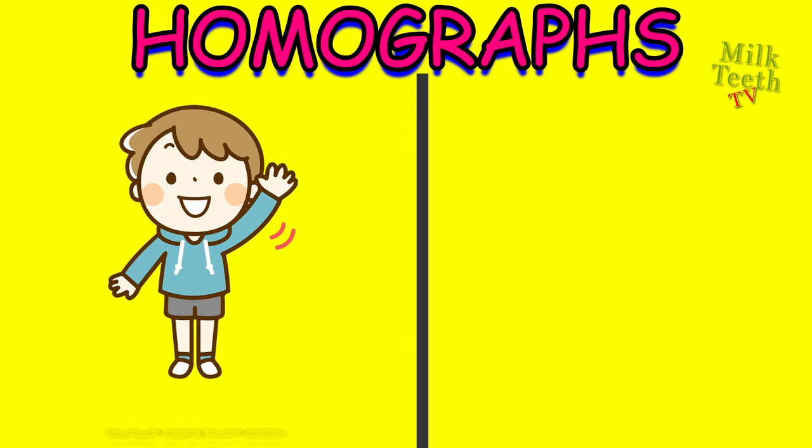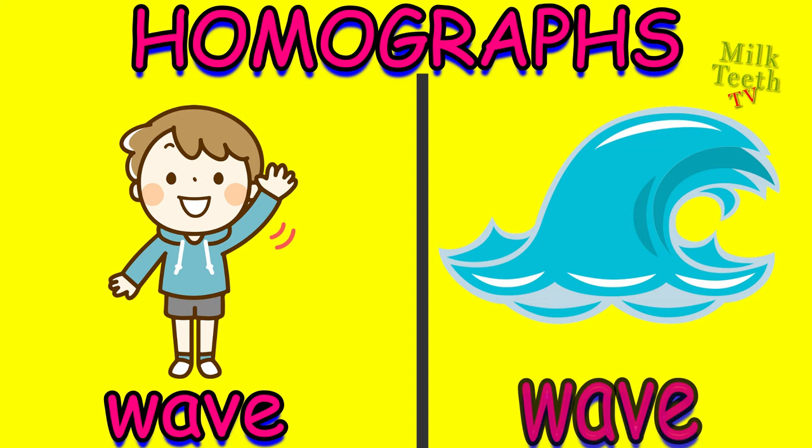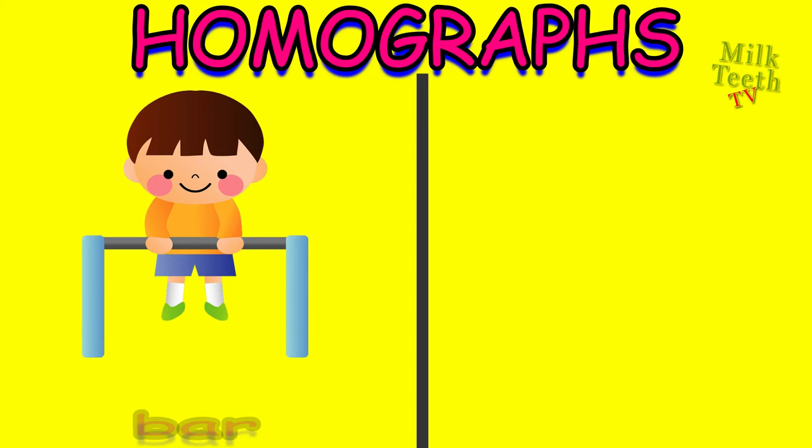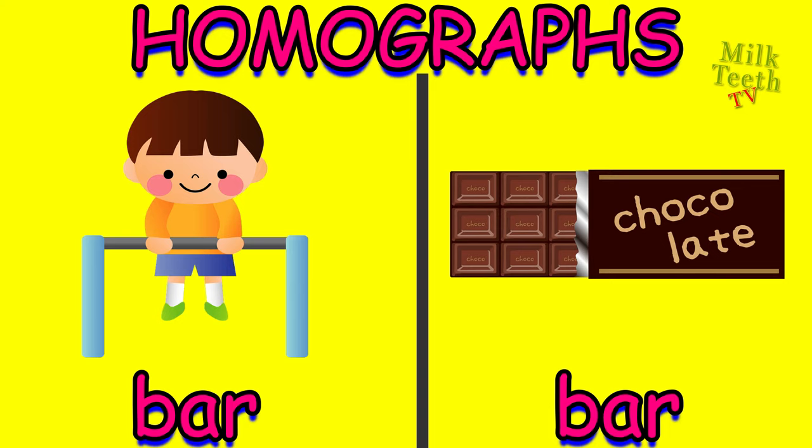Wave — to say hi. And this is an ocean's wave, a wave of water. Bar — an iron bar used to exercise. And bar — a bar of chocolate that kids love to eat.